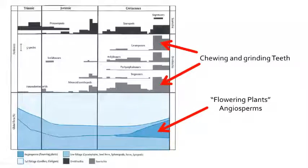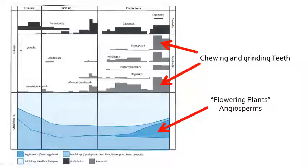If we look at the diversity of dinosaurs during the late Cretaceous, especially that of the Ornithopod dinosaurs, they became much more diverse, and many of these are chewing dinosaurs during this period of time. This is often called the flowering of the dinosaurs, because of the appearance of flowering plants during this time.